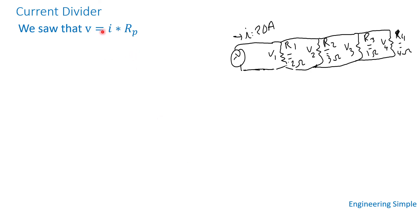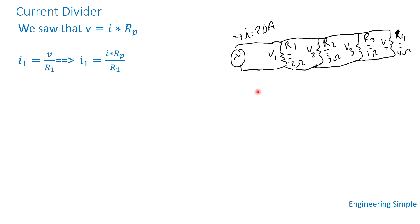We saw that voltage equals total current times the equivalent resistance. The current through resistance 1 is V divided by R1, and since V equals I times Rp, we can substitute: I1 equals (I times Rp) / R1, which can be rearranged as I1 equals (1/R1) / (1/Rp) times I. This is the current divider relationship.